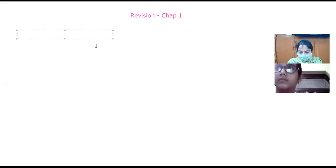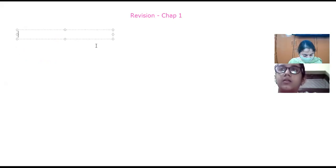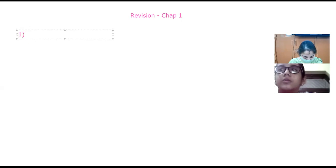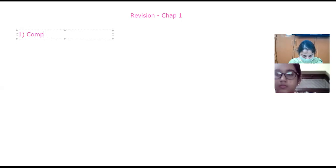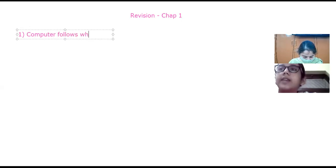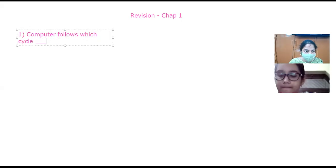Computer follows which cycle? The cycle followed by a computer is IPO. What is the full form of IPO? The computer cycle is IPO and the full form of IPO is Input Process Output.